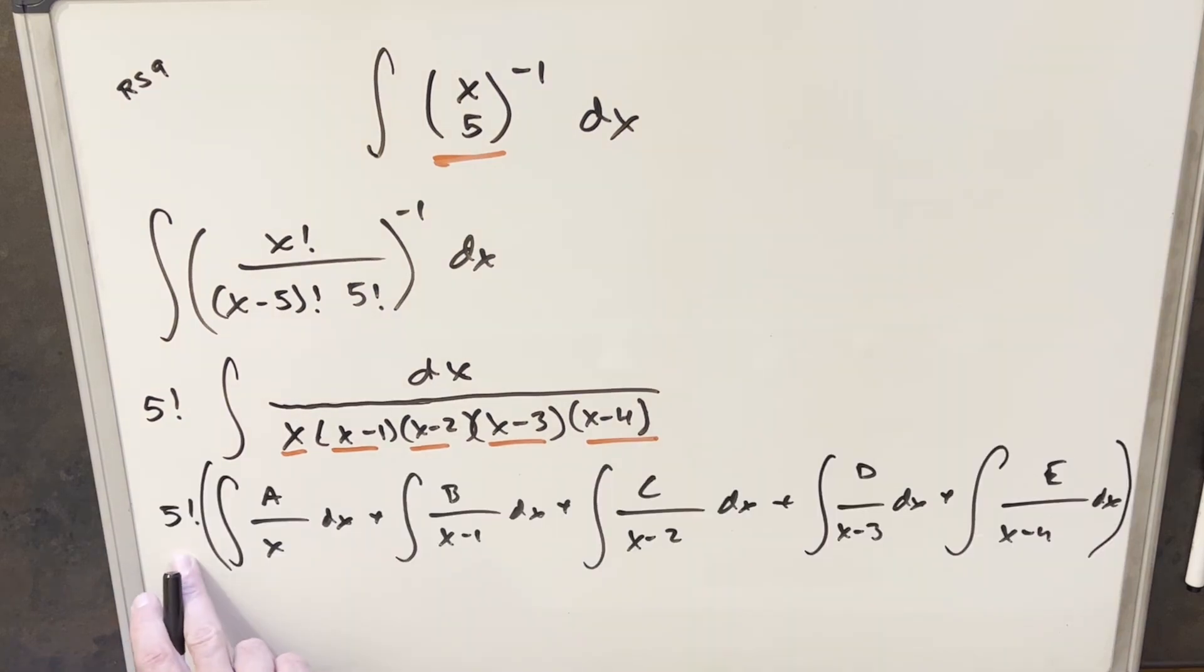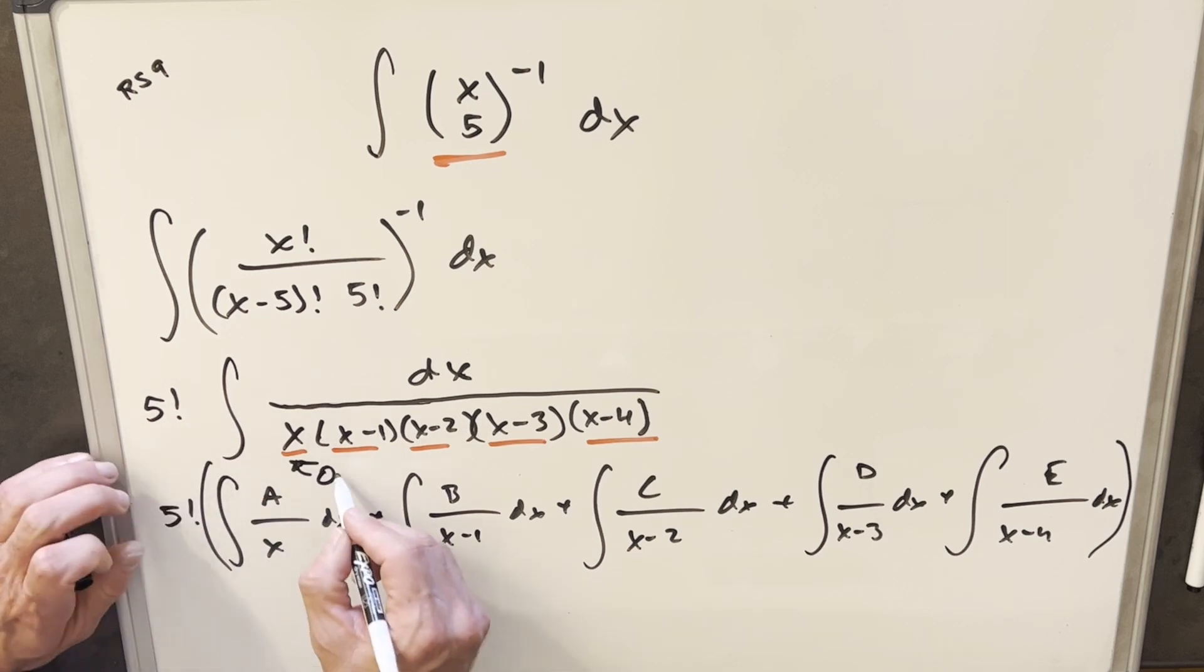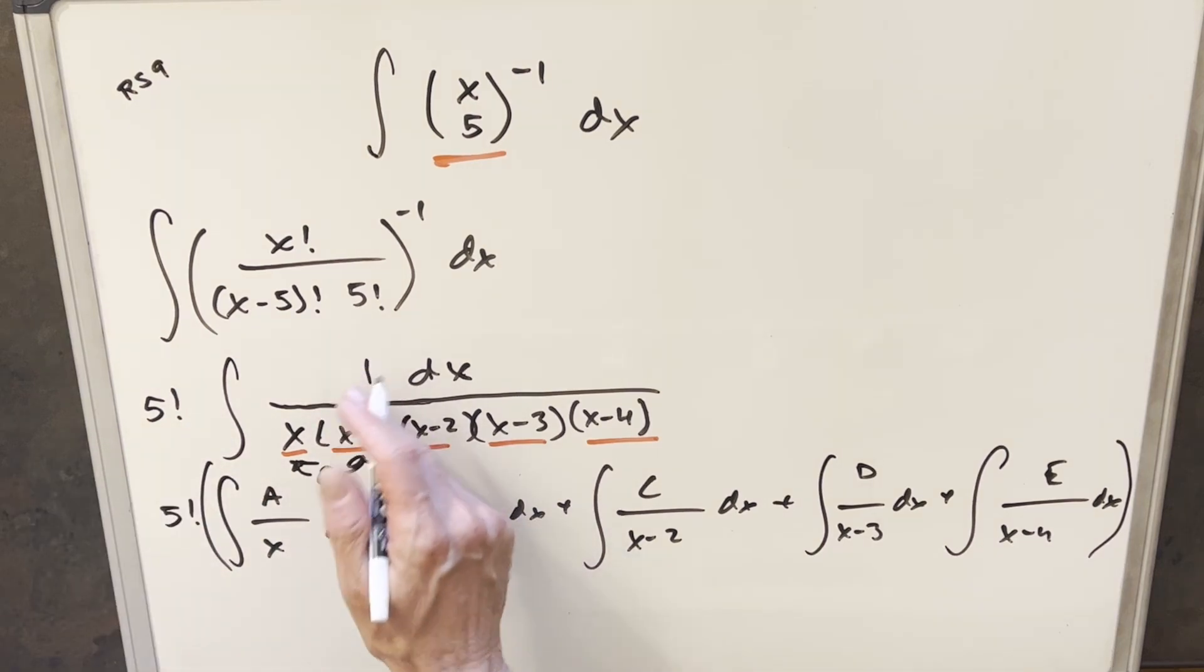Okay, so we have it all split up now, and I just brought my 5 factorial in front. And then for this, what I'm going to do is use the cover-up method. And so what I'll do to start, we'll just plug in for each of these terms, we're going to want to plug in what makes it 0. So starting with x, if I plug a 0 in, we'll cover up the x.